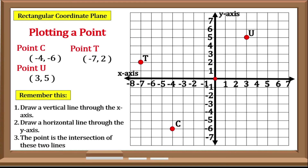And lastly, we have Point E. Point E has a coordinate of positive 6, 0. Step 1: create a vertical line to positive 6. Step 2: a horizontal line to 0. Step 3: the intersection of these lines would be the position of our point, so Point E is located here.